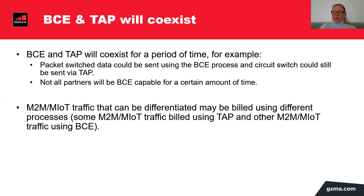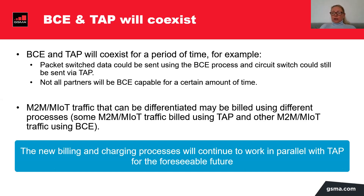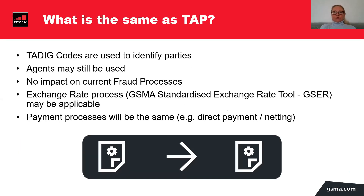Not all of your partners will be capable of using BCE for a certain amount of time. But if you have MIoT traffic or M2M traffic that you can differentiate on your network, you can monetize it using different processes. The new billing and charging processes will continue to work in parallel with TAP for the foreseeable future. So what's the same as in TAP? We still decided to use static codes. Agents may still be used for data cleaning and financial clearing. There is no impact on current fraud processes. Exchange rate processes if needed will use the GSMA standardized exchange rate tool, and payment processes will be the same — direct payment or netting.